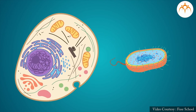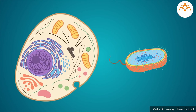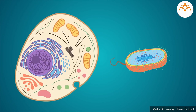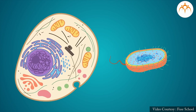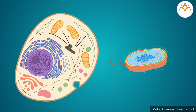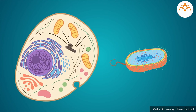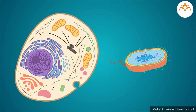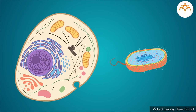Prokaryotic cells also perform all the cellular activities required for maintaining life, but there are no specific cell organelles dedicated to various cellular functions. All activities occur in the cytoplasm and sometimes in association with the cell membrane. Thus, there are lesser opportunities for specialization of cells. This is the very reason that all more evolved multicellular organisms are made up of only eukaryotic cells.